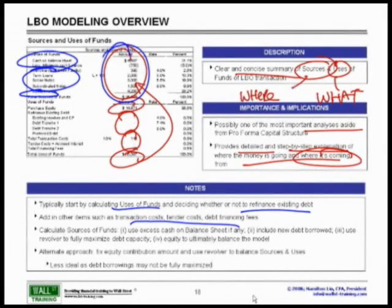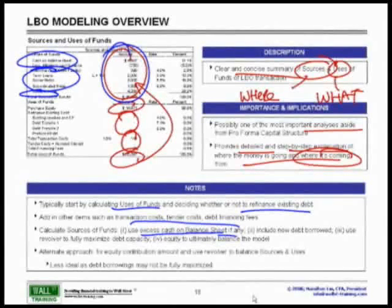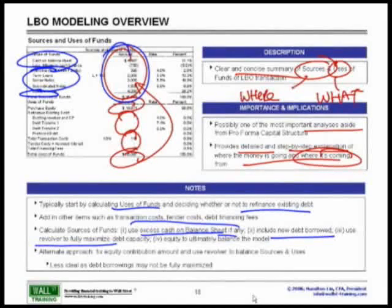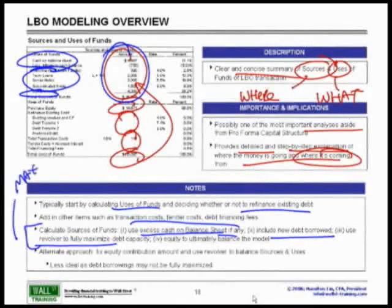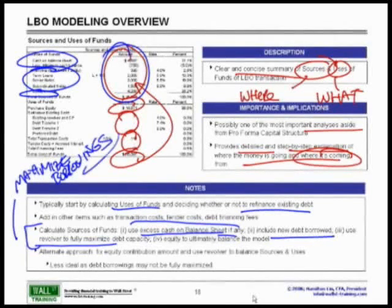Then you calculate the sources of funds. Use any excess cash on the balance sheet — that's really great because you don't have to come up with your own capital; you use the company's own money to pay for itself. Any new debt borrowed is key, and typically we will use the revolver to fully maximize the debt capacity — maximize our borrowings — which ties back into our additional debt capacity to figure out how much money we can fully borrow.